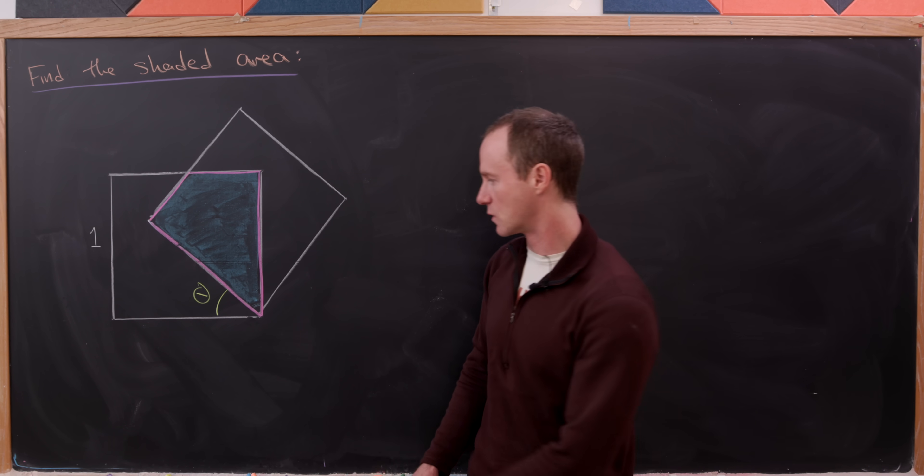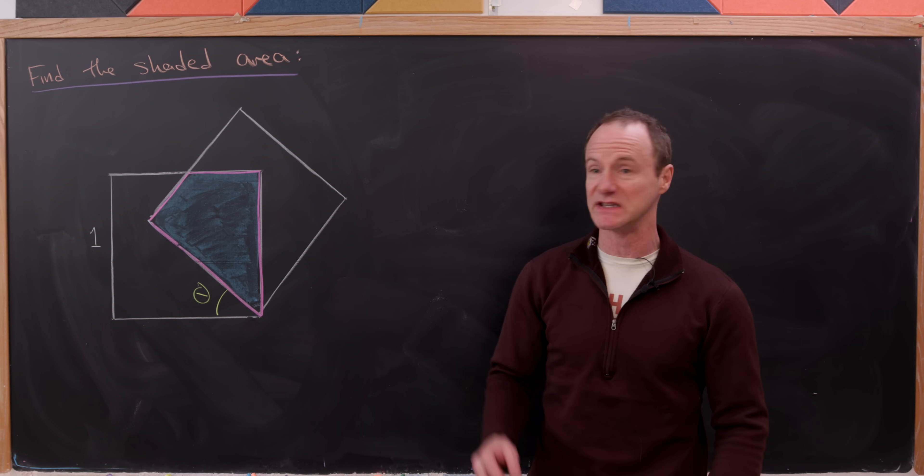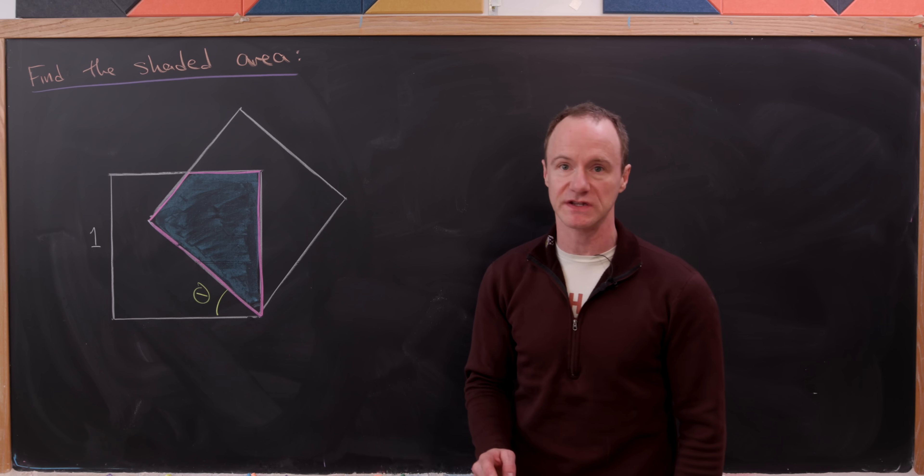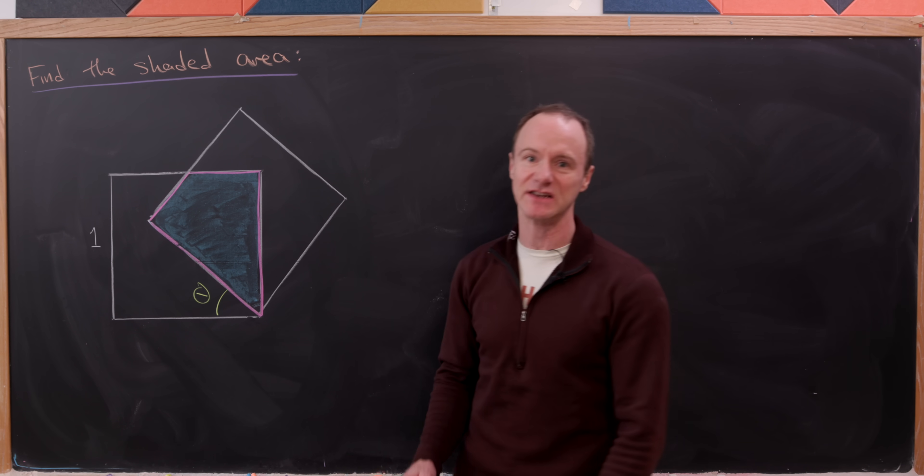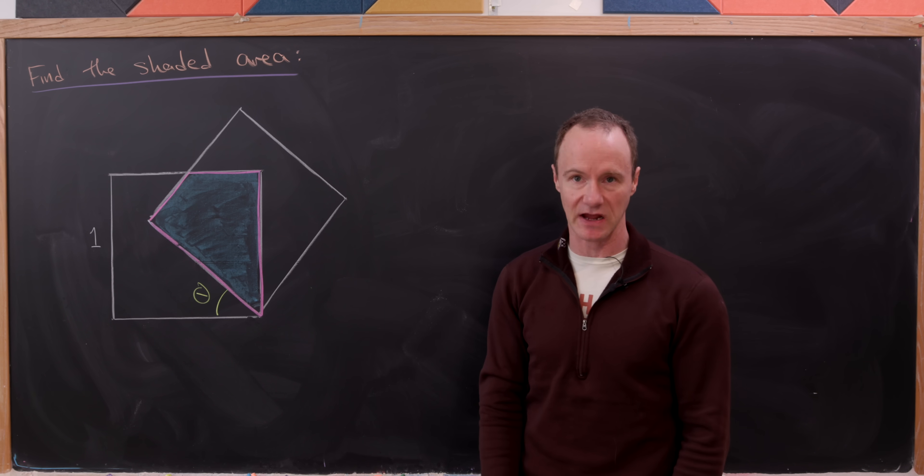Now let's take another unit square and pin these two vertices together as we see in this picture and rotate one of the unit squares by theta degrees or theta radians depending on how you want to measure that angle.